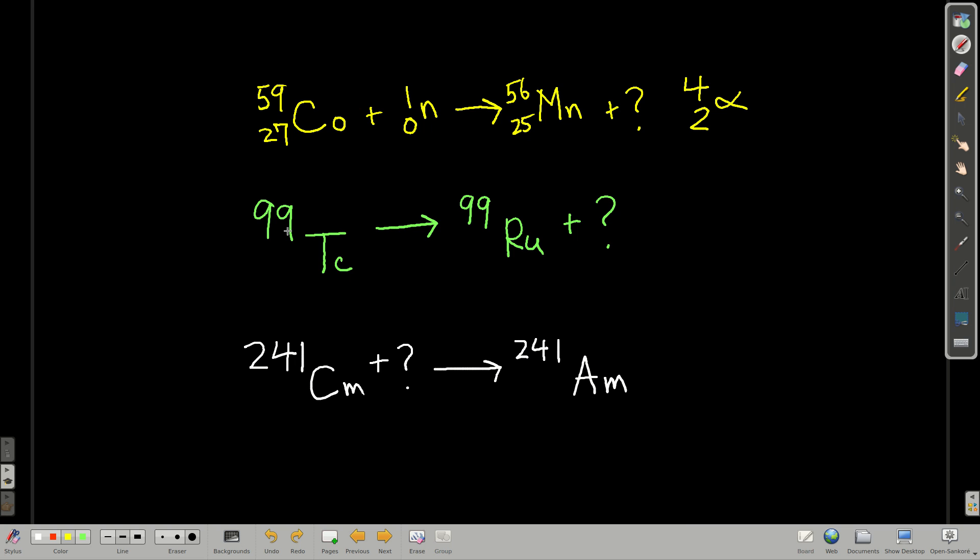Now, technetium-99 to ruthenium-99. Notice I did not give you the atomic numbers down here. That's because you can look them up on a periodic table. So if you look technetium up, you see that it has an atomic number of 43. And ruthenium is 44. Knowing that, 99, 99 here, so that means we're going to have a 0 on top. And on the bottom, 43, 44, we have to take one away from 44 to make it 43. So it's negative 1, 0, and negative 1 is an electron or a beta particle.